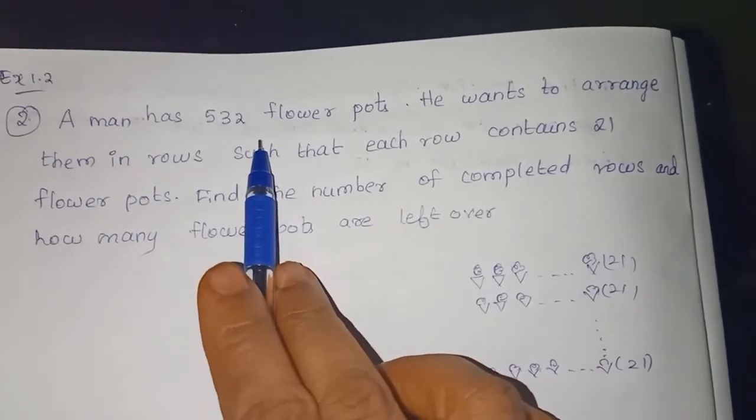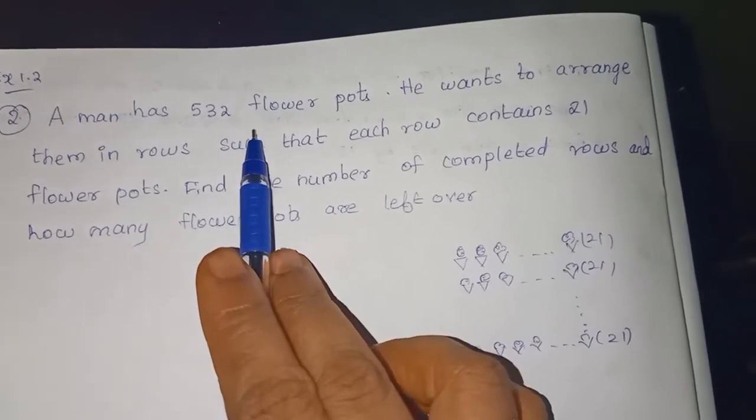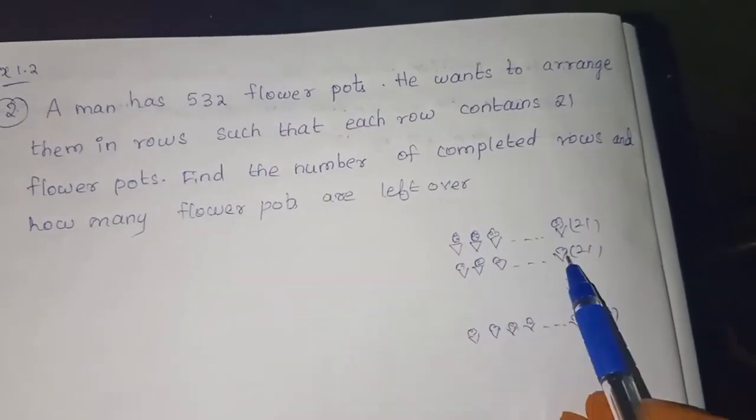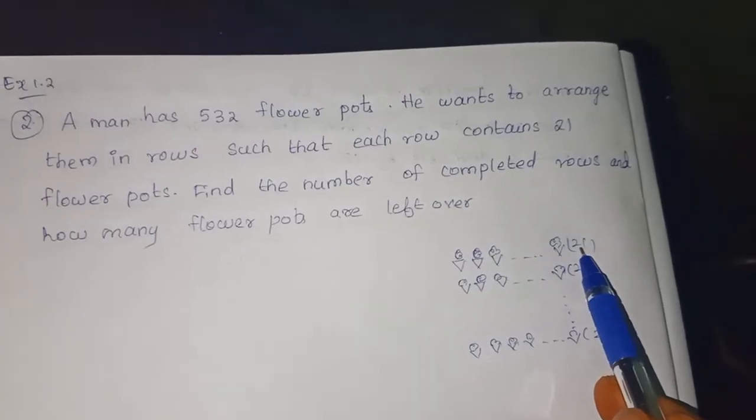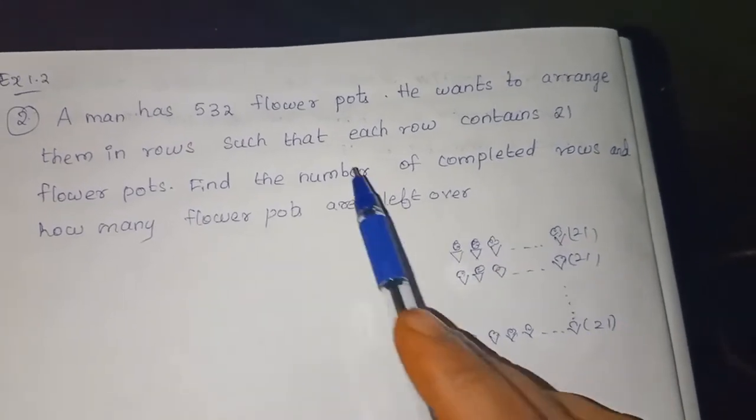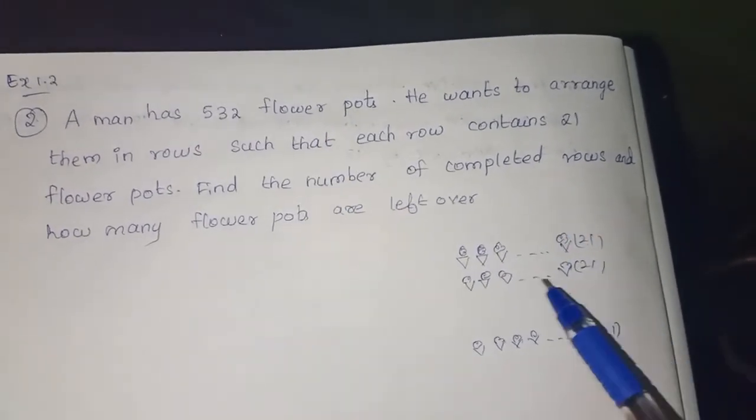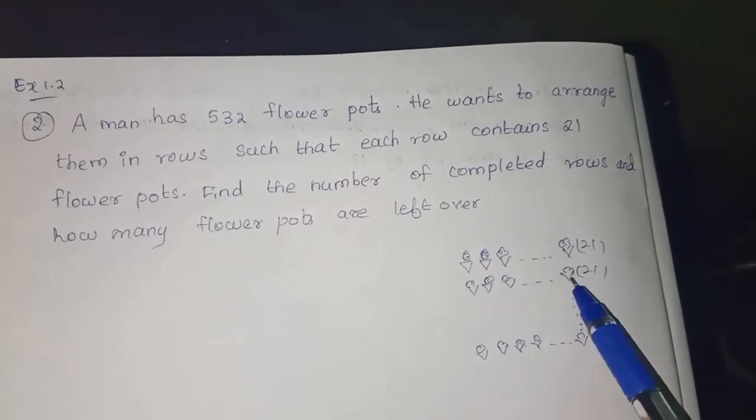He has 532 flower parts. He wants to arrange them in rows. Each row contains 21 flower parts. Totally 532. He is going to divide equally in rows.